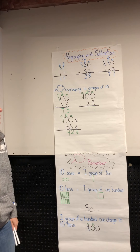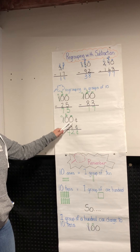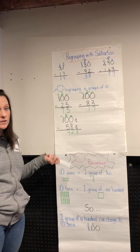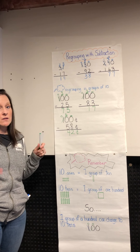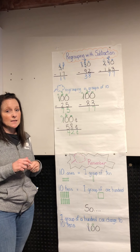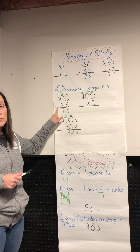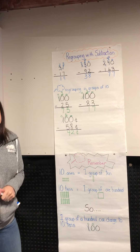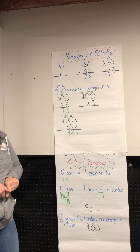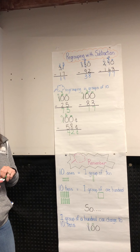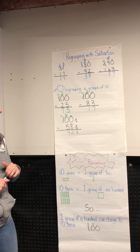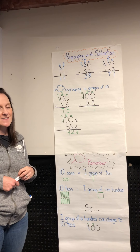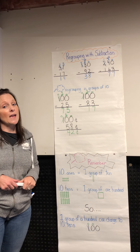Grade twos, when you do your exit ticket, I want you to show your regrouping across the columns — going from hundreds to tens, then borrowing from tens and bringing it to ones. If there's a cent sign, include it. Even if you write the question on paper, take a picture and send it to me. That's what I'm looking for: are you showing your regrouping thinking in groups of ten? Add questions to the private comments or have your parents email me. You can do this!